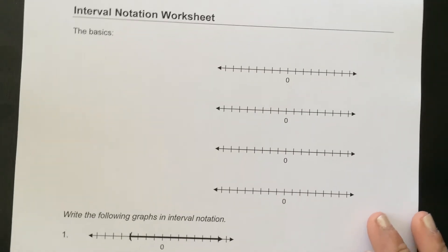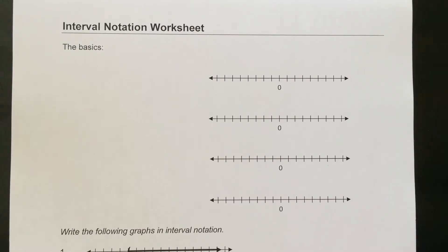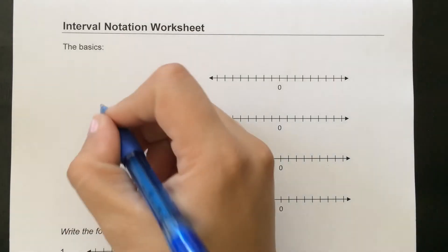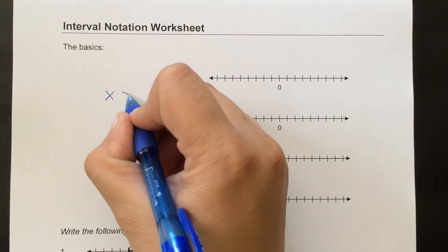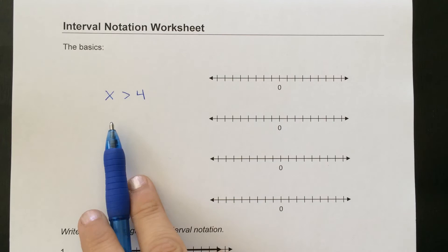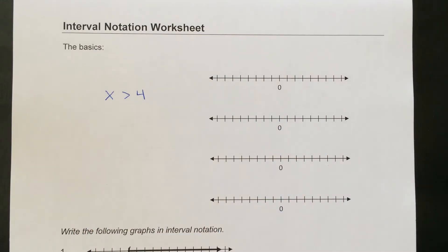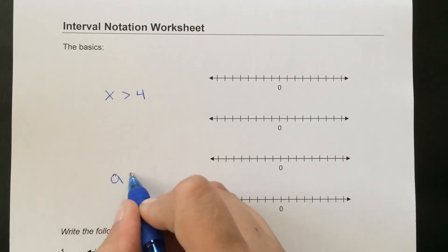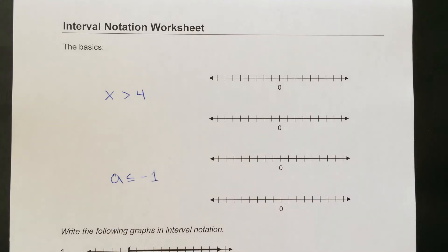I gave you a worksheet that you could print out, and I encourage you to follow along, take notes on it, and use it as we go. So I mentioned that inequalities are usually the first time people see interval notation. An example would be x is greater than 4. Another example would be something like a is less than or equal to negative 1. Those would both be inequalities.